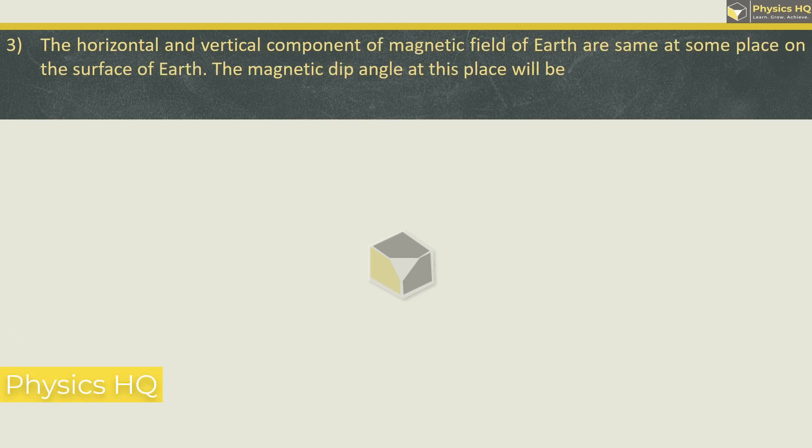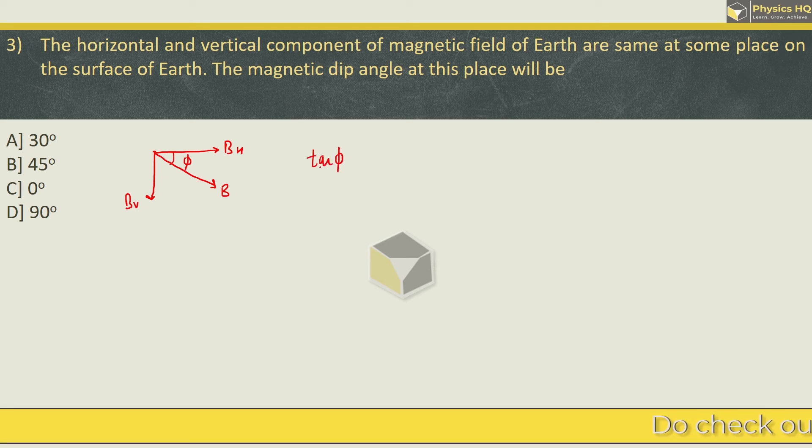The horizontal and vertical components of magnetic field of earth are same at some place on the surface of the earth. The magnetic dip angle at this place will be 30, 45, 0, or 90 degrees. So if the magnetic field is at some place on the surface of the earth, then it will have horizontal components and vertical components. And this angle is called angle of dip.